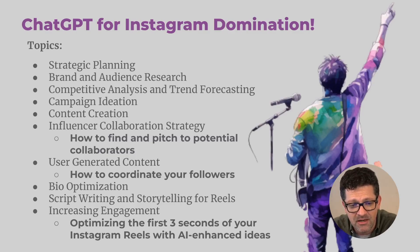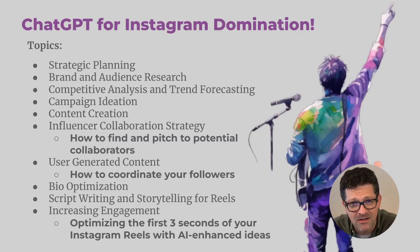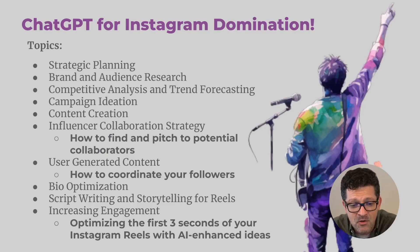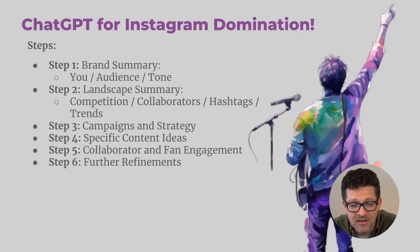The topics we're going to cover are strategic planning. We're going to get a handle on your brand and audience, a deep dive into your competitors, your collaborators, the trends, and the hashtags in your unique space. We're going to create content ideas around various campaigns, a fully customized campaign strategy. We're going to work with influencers, talk about how to collaborate with others, how you can find and pitch potential collaborators, user-generated content, bio information, script writing and storytelling for reels and increasing engagement, and how to make those first three seconds of any of your reels or stories pop. All of this is using ChatGPT as your co-pilot to help with every step.